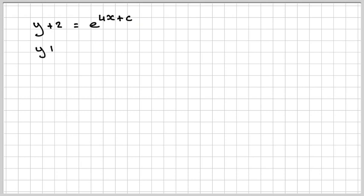Okay, and then using our rules of indices, we'll write this as y plus 2 equals e to the 4x times e to the c. This is just a number, so we'll call that a.